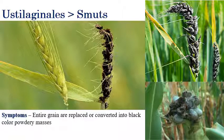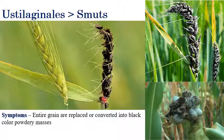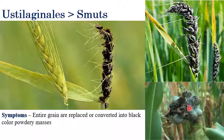Smuts come under Ustilaginales. The most important and prominent diagnostic symptom is that the entire grains are converted or replaced by black color powdery masses. If we touch them, we can sense the powder-like substance. Entire grains being converted into black color powdery masses is the diagnostic symptom of smuts.